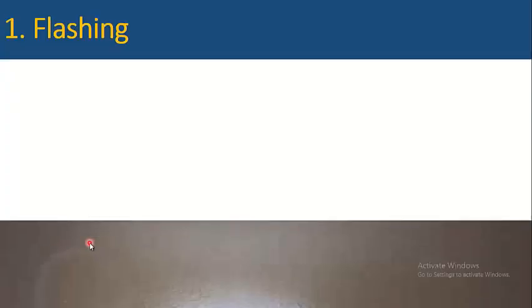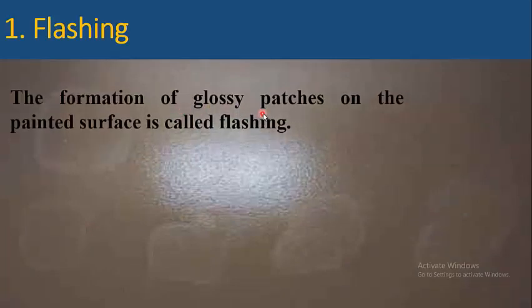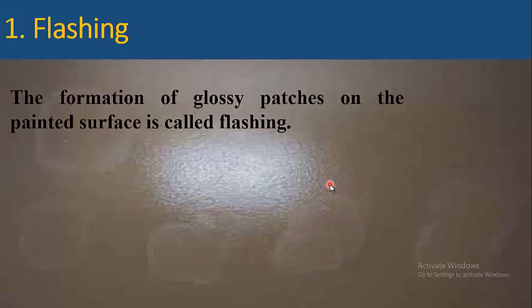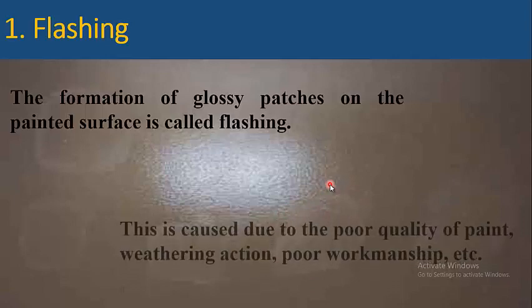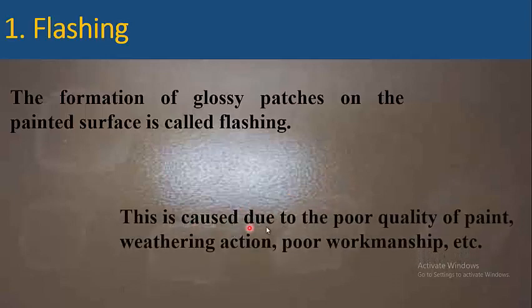The first one is flashing. The formation of glossy patches on the painted surface is called flashing. As you can see, the glossy patches that appear on the painted surface illustrate flashing. This is caused due to the poor quality of paint, weathering action, or it could be due to poor workmanship.